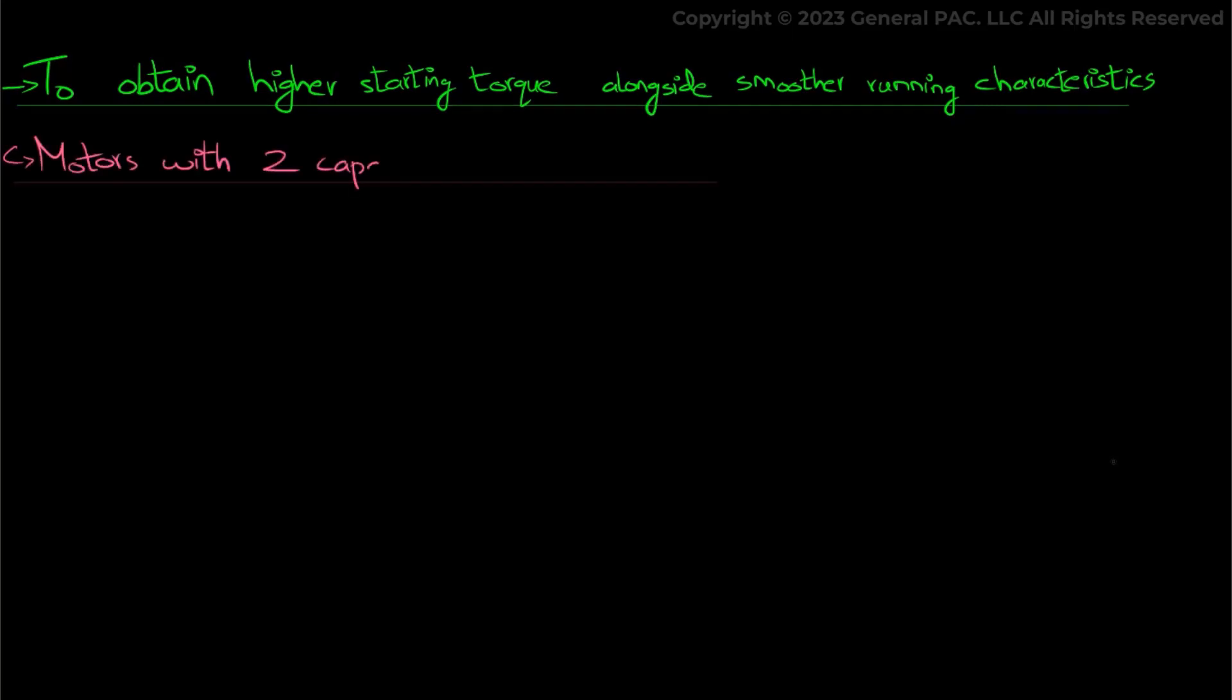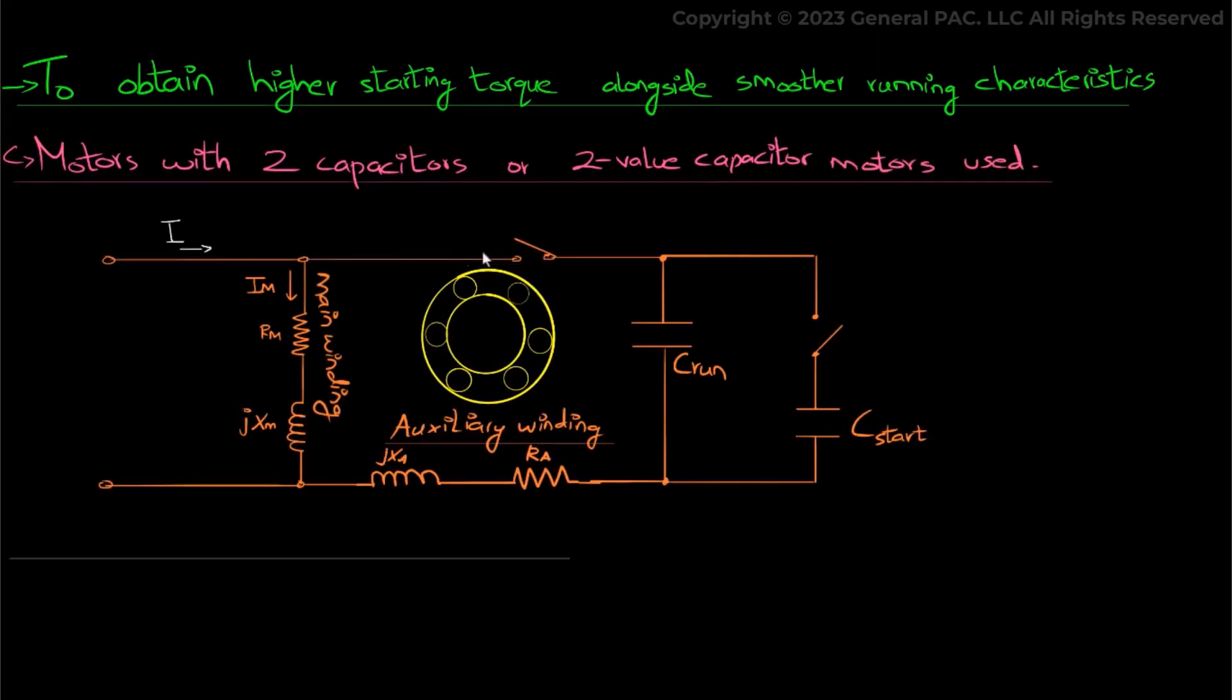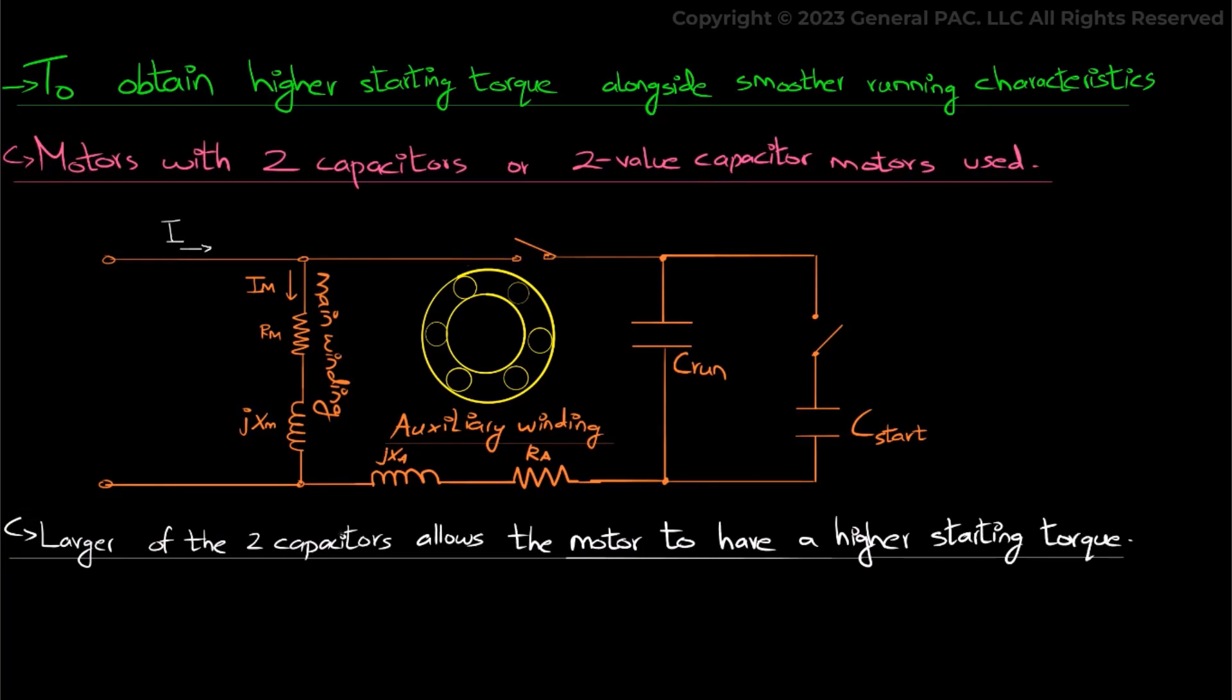So in order to obtain this high starting torque alongside a smoother running characteristic, motors with two capacitors or two value capacitor motors are used. So there's two values of capacitors, right? And the larger of the two capacitors allow this motor to have a high starting torque and then it's disconnected once the motors start running.